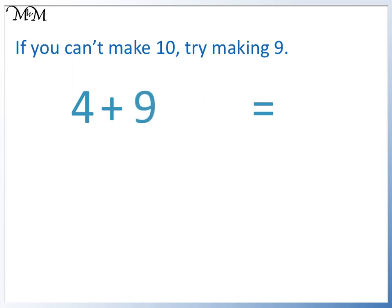To add 9 to 4, we can add 10 and take away 1. Our answer will end in a digit 1 less than 4. It will end in a 3. 4 plus 9 equals 13.